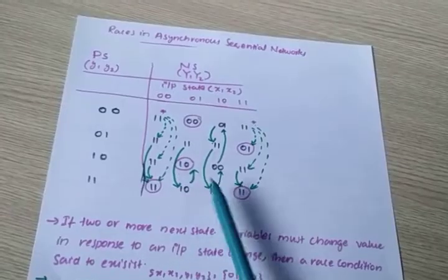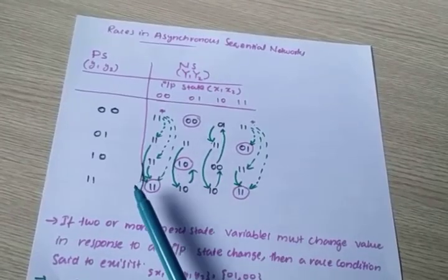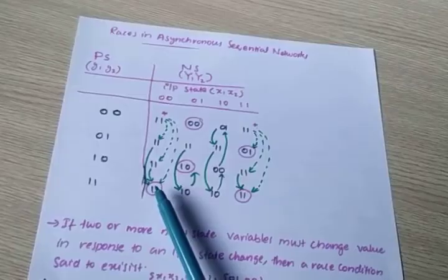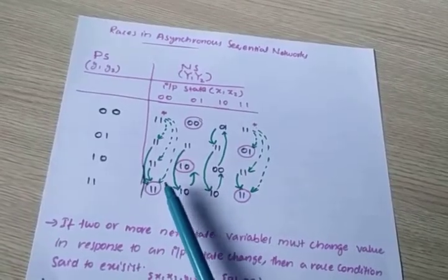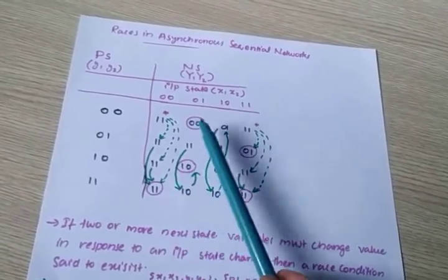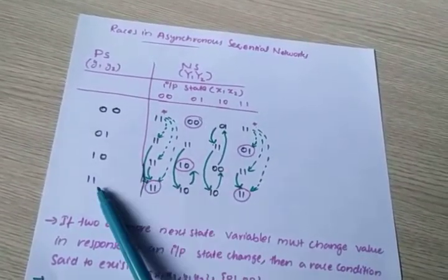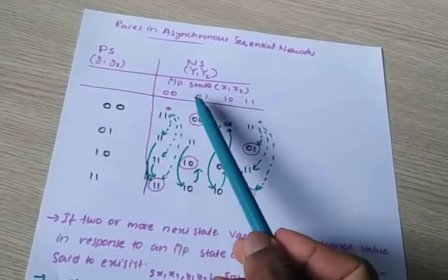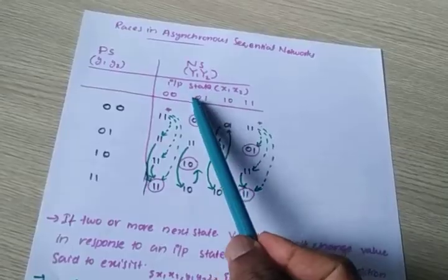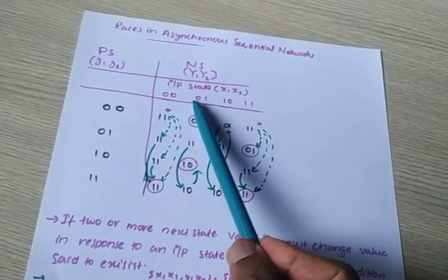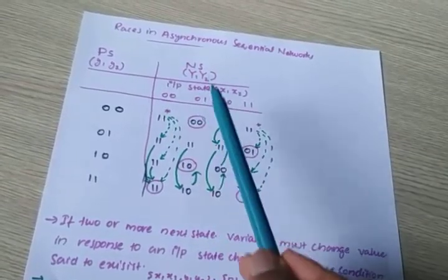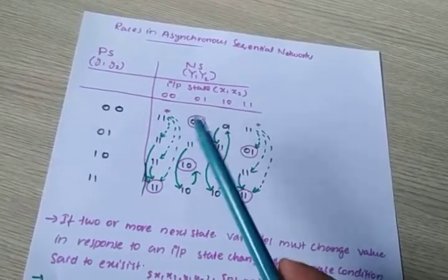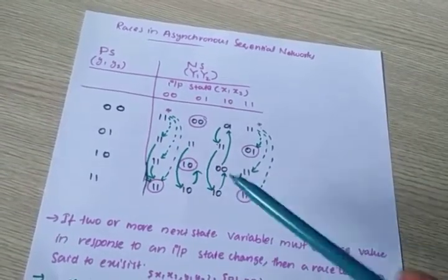These circled states are the stable states. So from the starting condition, when x1, x2 changes from 0, 1 to 0, 0 and y1, y2 is 1, 1, the system reaches the 1, 1 stable state. In the feedback path, there are two delay elements through which we are feeding back.